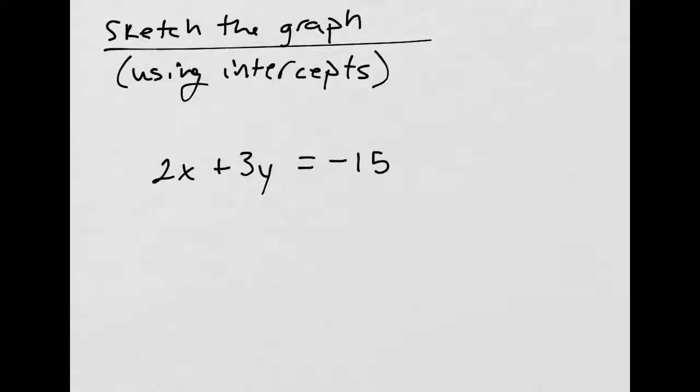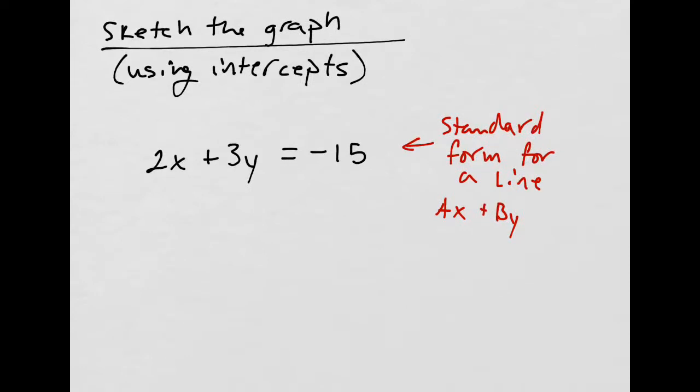So, for this, this is called standard form for a line. This is standard form, which simply means that you have AX, A in this case is 2, plus BY, B in this case is 3, yes it's 3, very good. And then equals C, and C in this case is negative 15. That's just standard form. X comes first, then Y, and then a constant, or just a number with no variable.